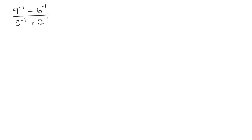Here's our next example. When you first look at it, it doesn't even look like a complex fraction, but notice we have negative exponents. We have to remember what a negative exponent means: four to the negative one means one over four to the first power, so four to the negative one is just one-fourth. Applying that to all terms, we get one-fourth minus one-sixth in the numerator, and one-third plus one-half in the denominator. Now we have a complex fraction, but with more than a single term in both the numerator and denominator.